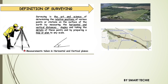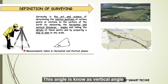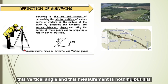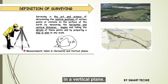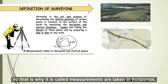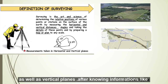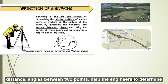These line measurements and this angle are made in a horizontal plane. For example, if I measure an angle with respect to this vertical measurement, it is in a vertical plane. That is why measurements are taken in horizontal as well as in vertical planes.